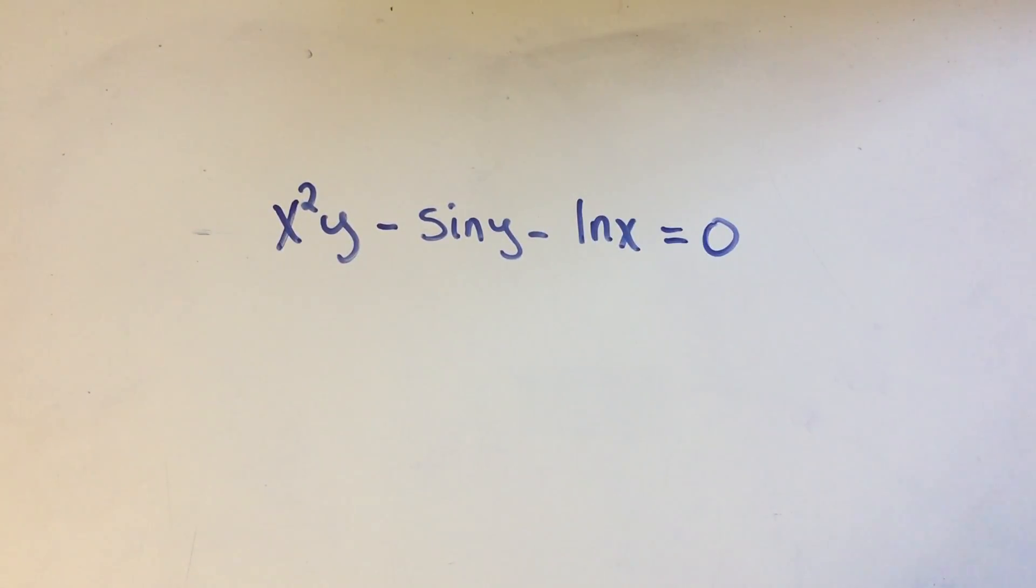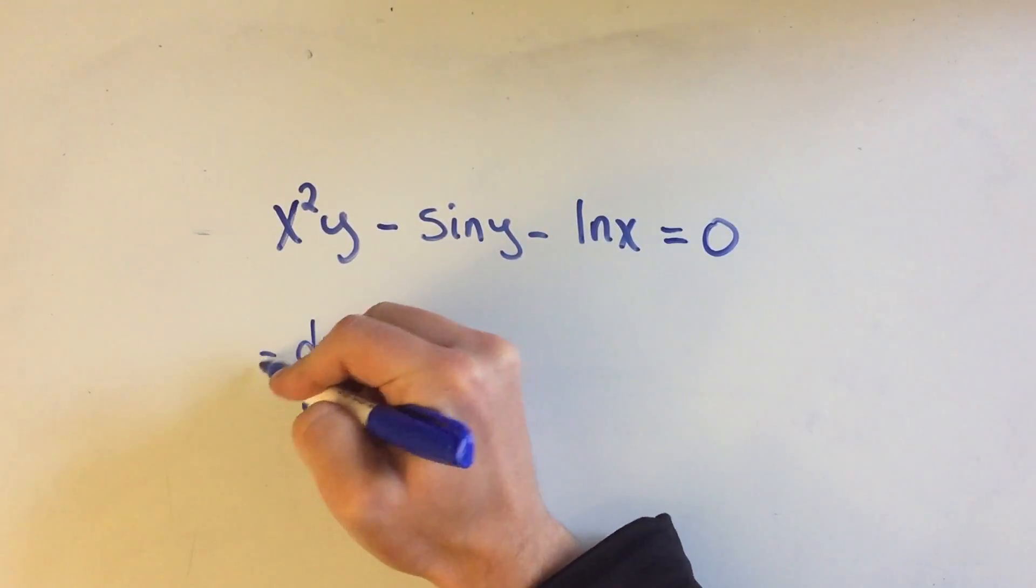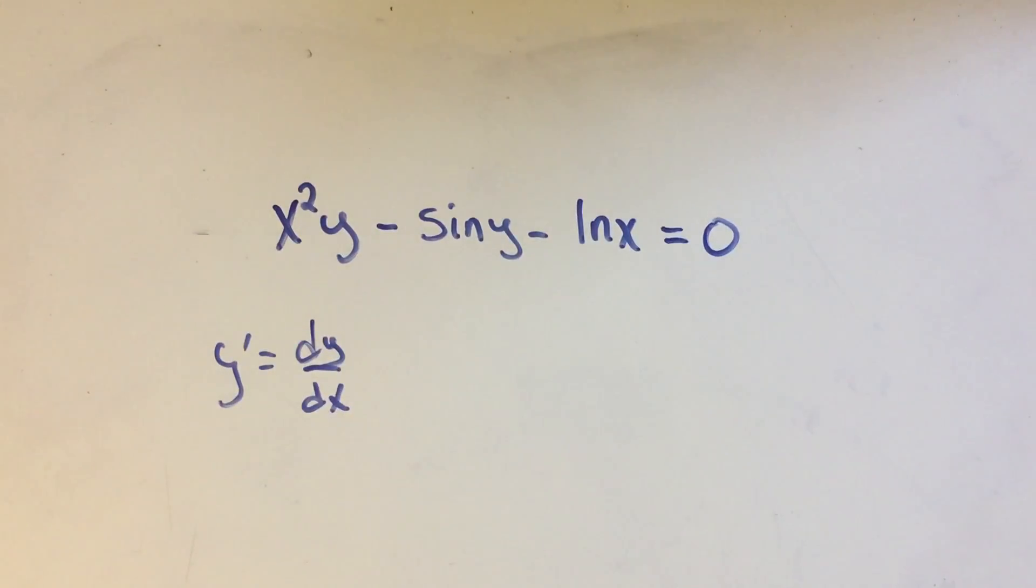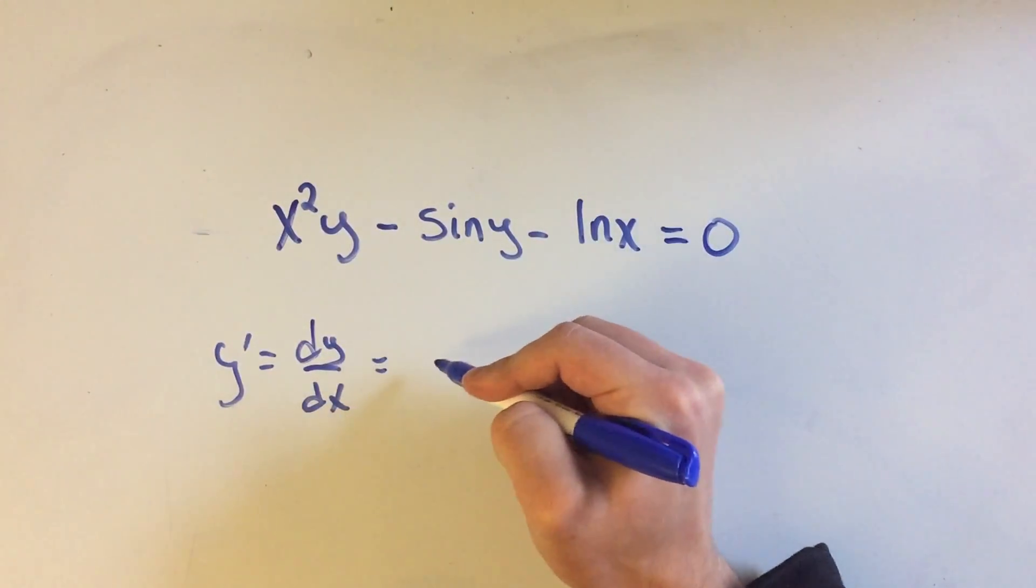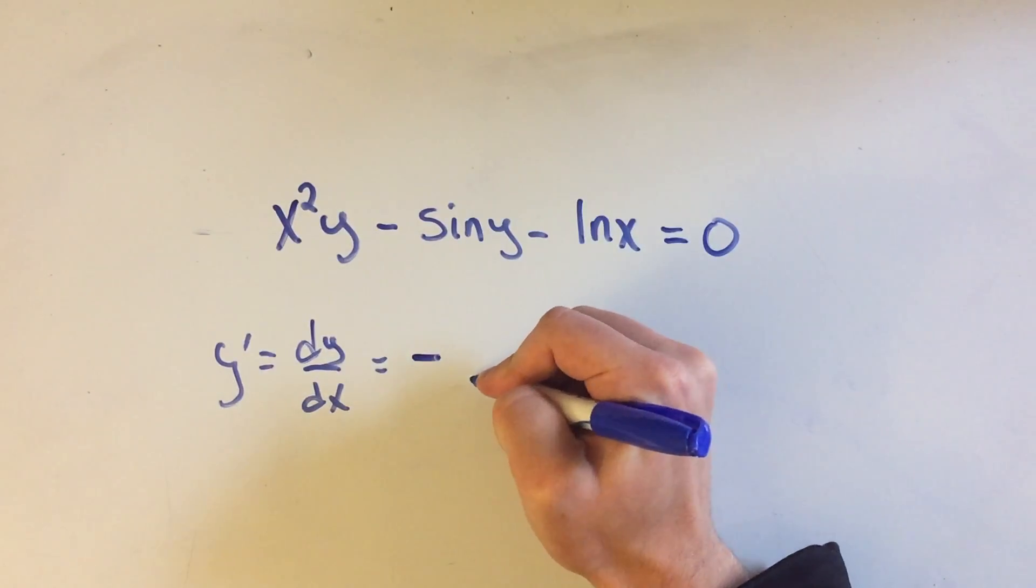Now here's the trick. The answer, so the derivative of this function with respect to y, I call that y prime, and I'm just gonna be able to write this answer in one line. It's minus, it's gonna be a big fraction.